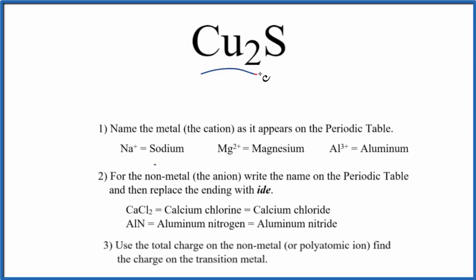To write the name for Cu2S, let's first write the name of the metal, the positive ion called the cation, as it appears on the periodic table. So Cu, that's copper.